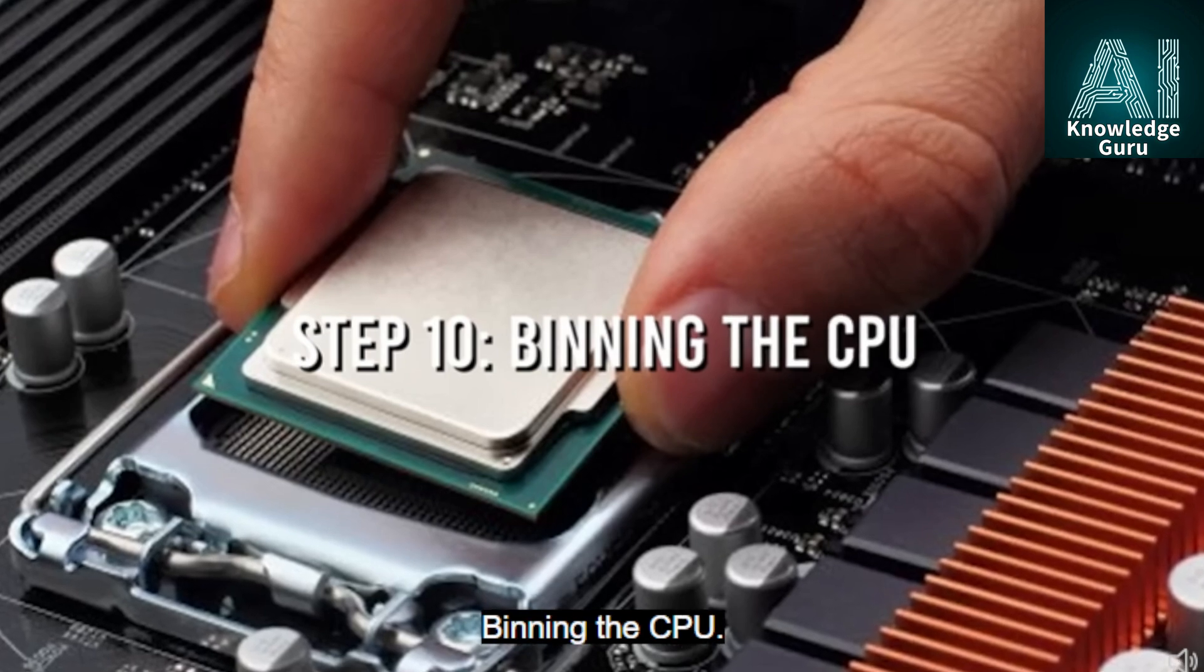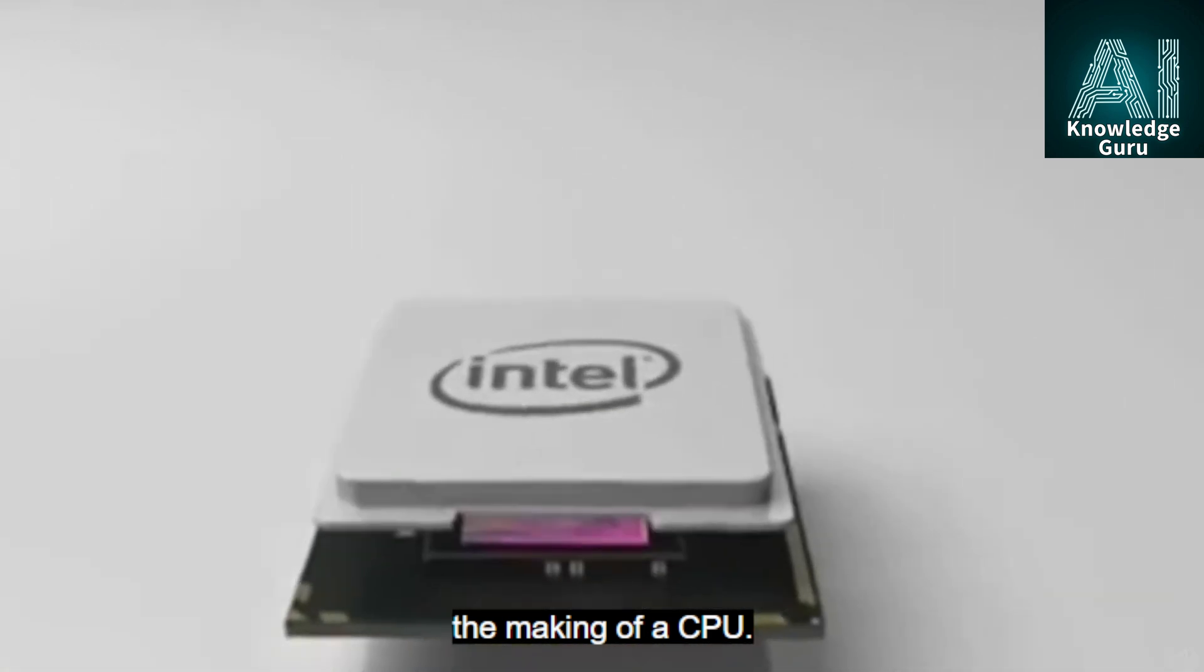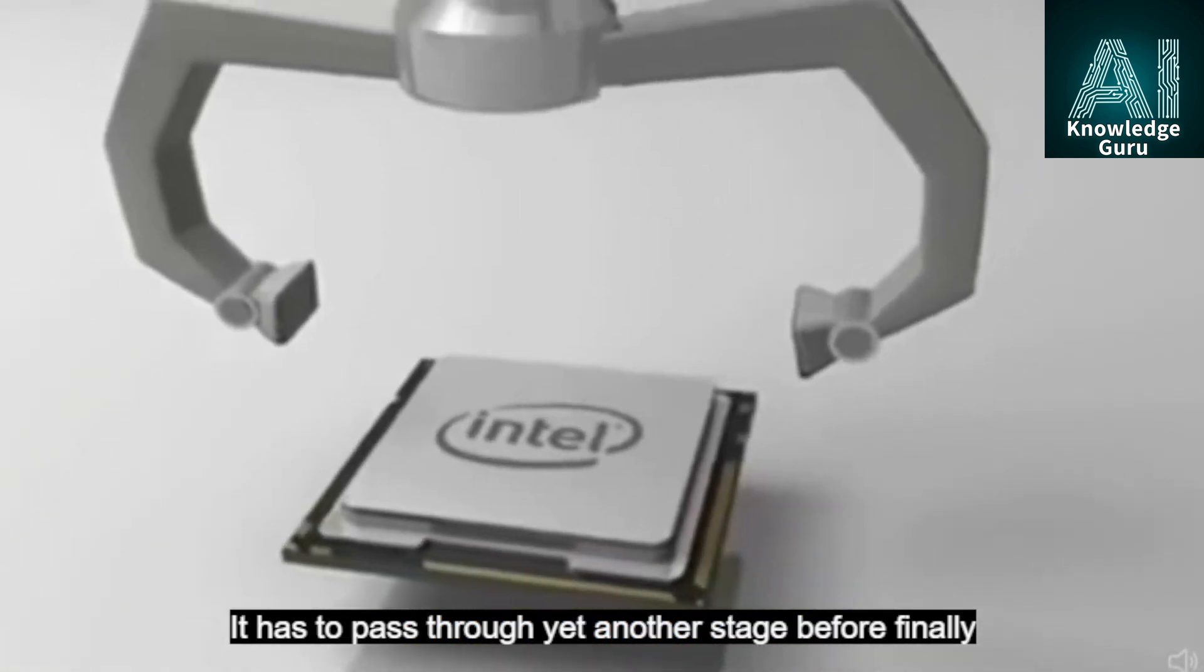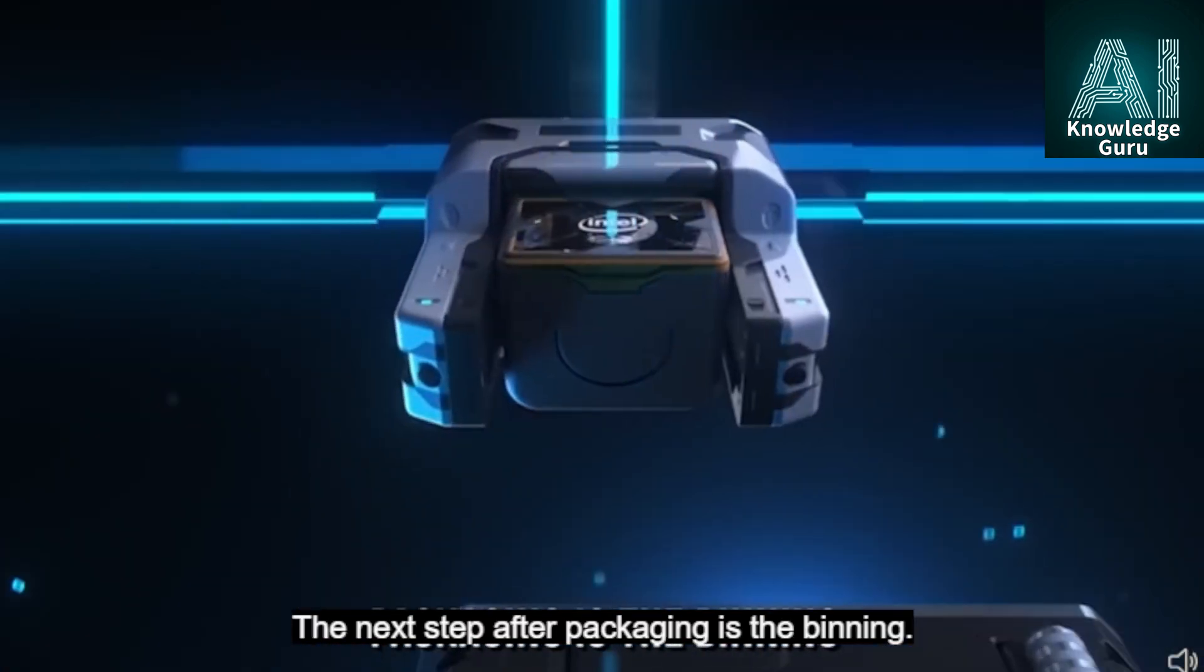Step 10: Binning the CPU. The packaging is still not the final step in the making of a CPU. It has to pass through yet another stage before finally being ready to be sold off at the stores. The next step after packaging is the binning.